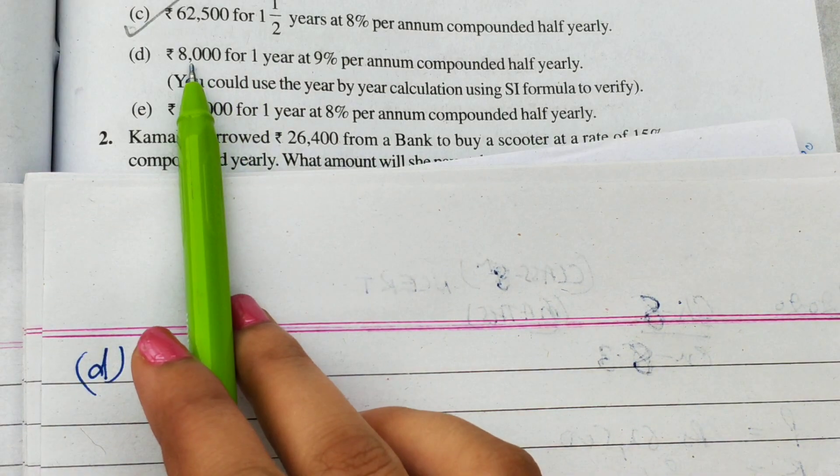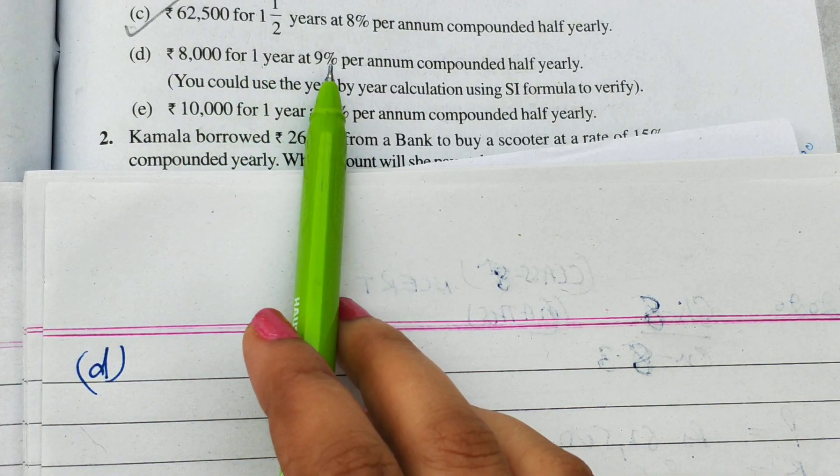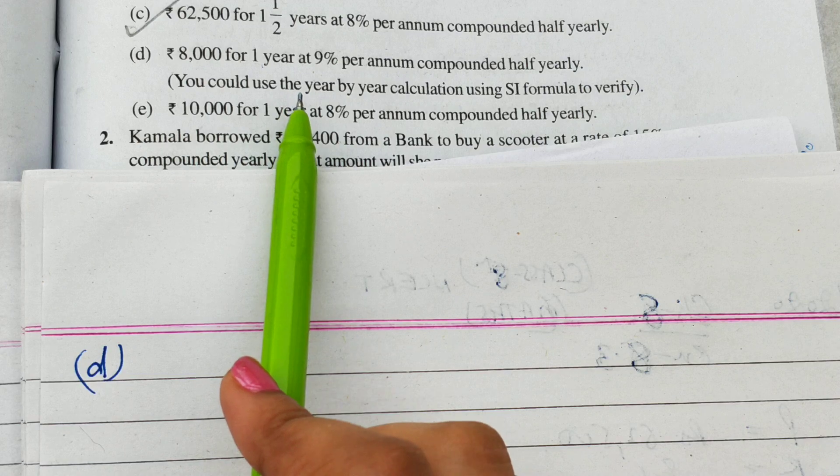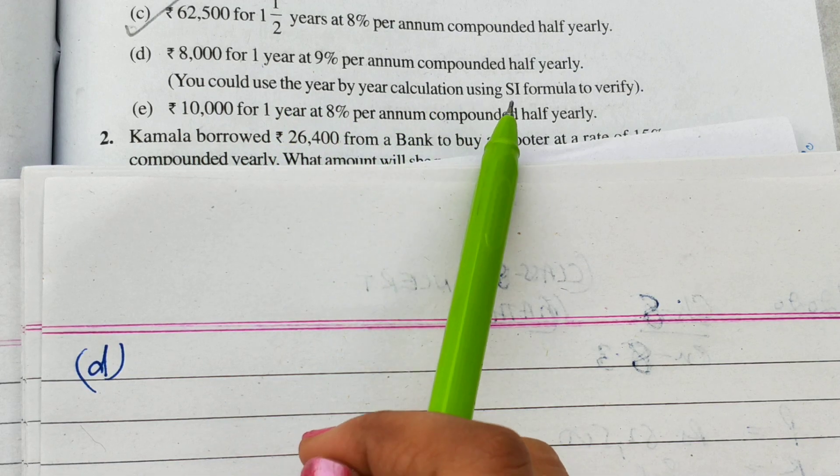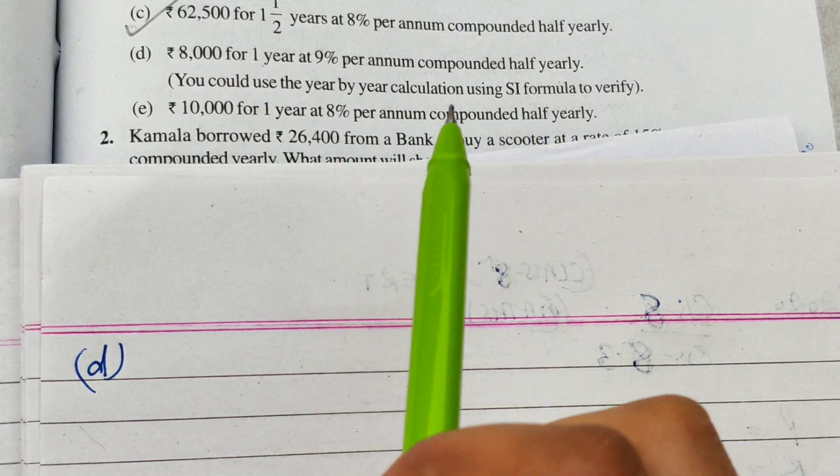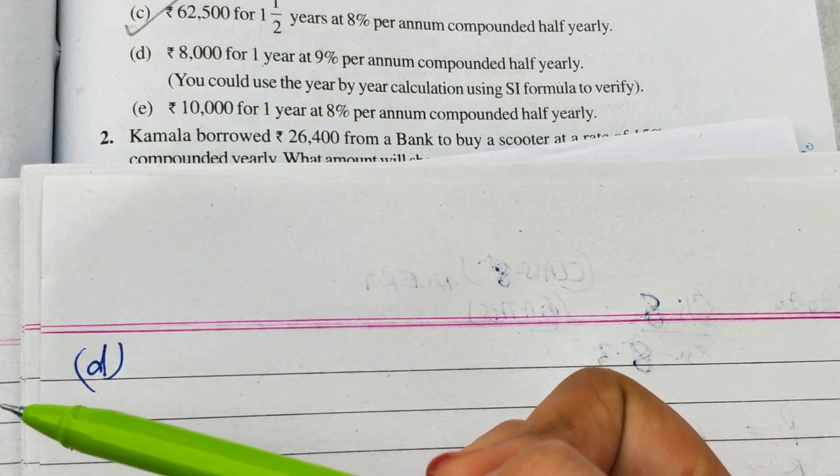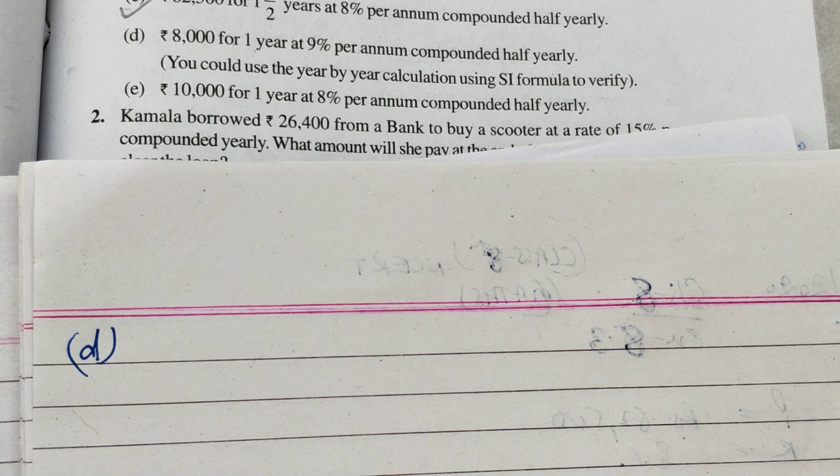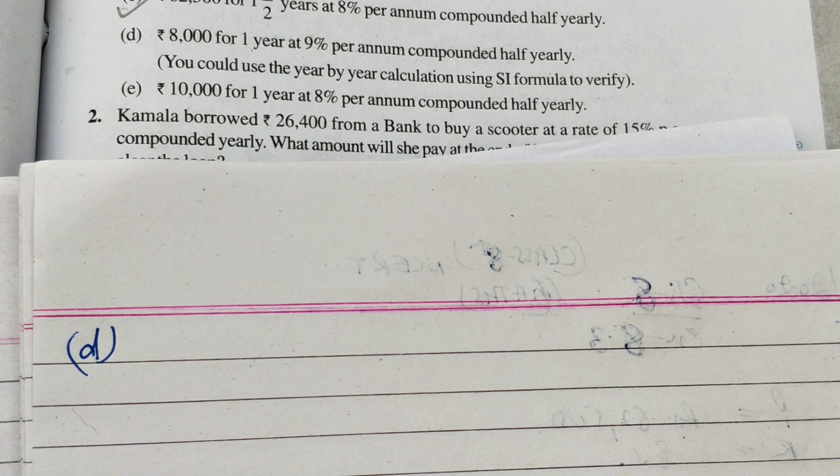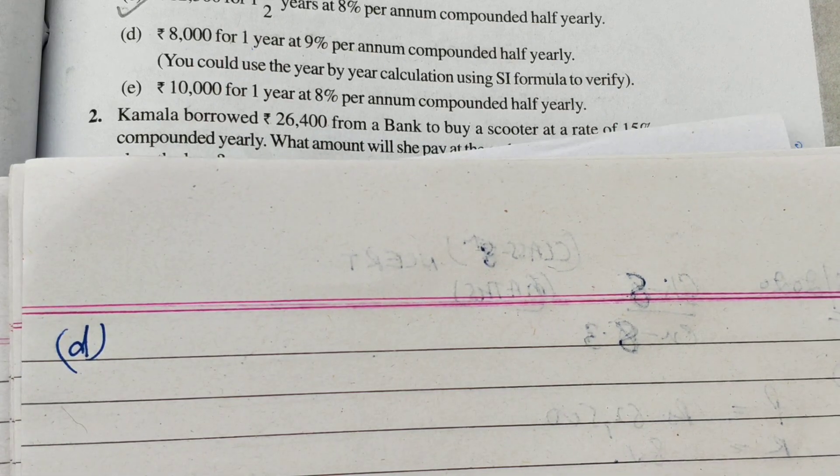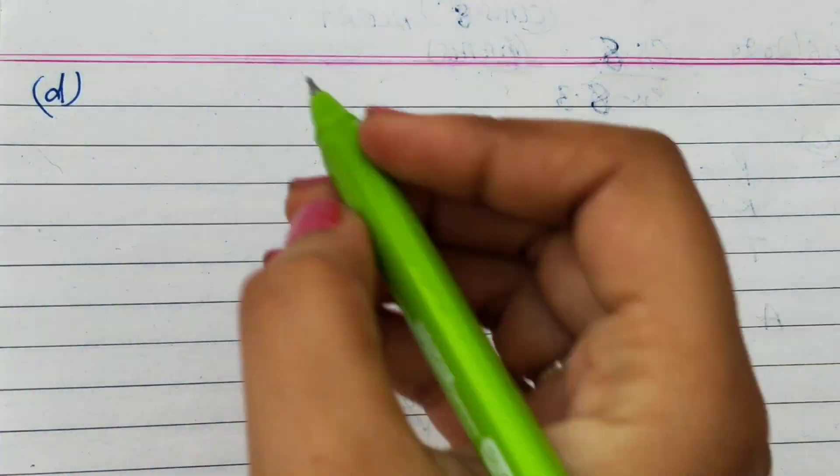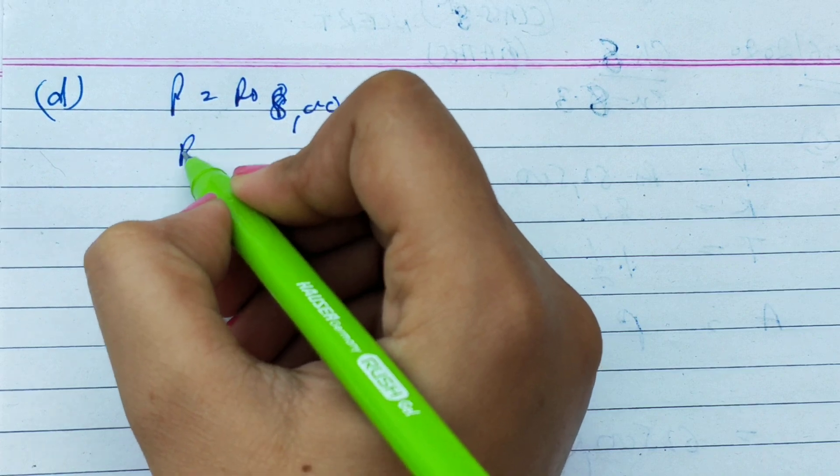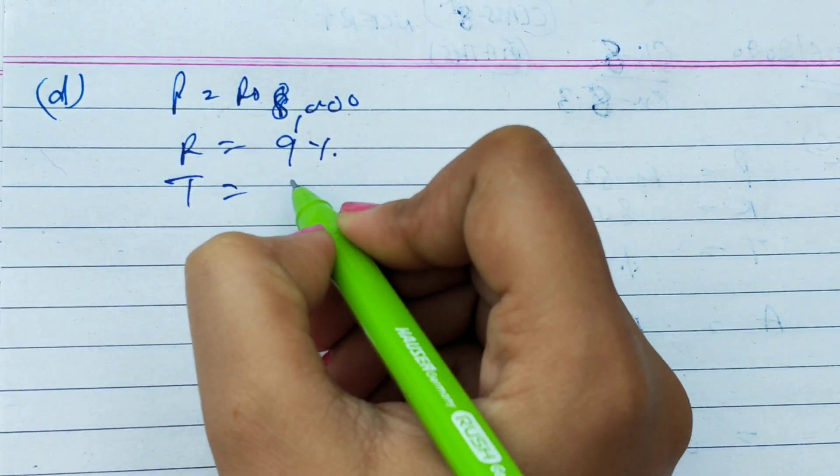Next we will do our part D. Part D is rupees 8,000 at 9% for one year, compounded half-yearly. They have written one hint that you could use year-by-year calculation using simple interest to verify. But if we have a formula, why do we do such a lengthy method? So we will solve this directly.